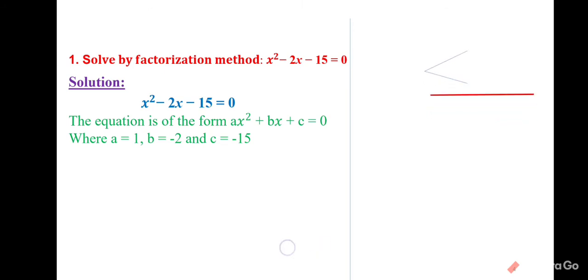We have to follow the structure: a and c will be multiplied. a = 1 and c = −15, so the product is −15. We need to find two numbers whose product is −15 and whose sum is −2. The multiples giving 15 are 5 and 3: 5 × 3 = 15, and 5 − 3 = 2.